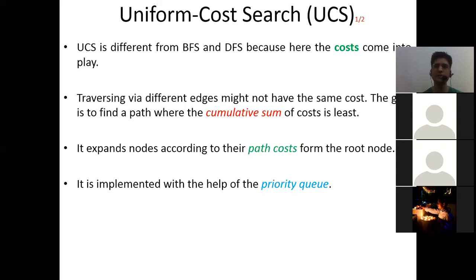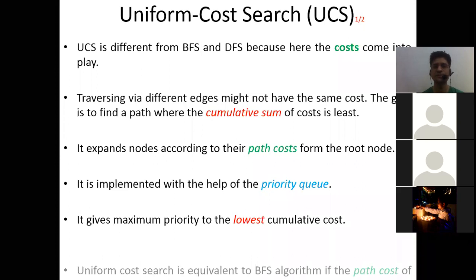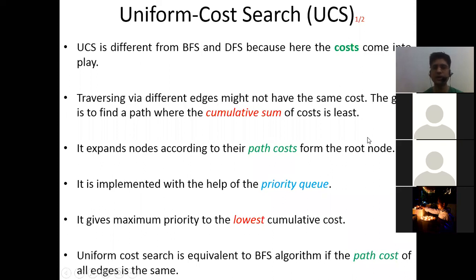Uniform cost search is implemented with the help of a priority queue. We give priority to the lowest cost and put them into the priority queue, then move in that direction. It gives maximum priority to the lowest cumulative cost. Uniform cost search is equivalent to breadth first search when the path cost of all edges is the same — this is actually a question that appears in gate examinations. So remember: uniform cost search is equivalent to BFS when path cost of all edges is the same.